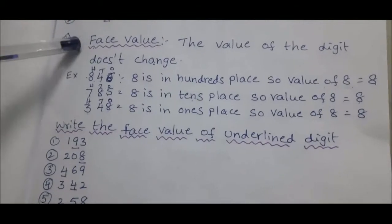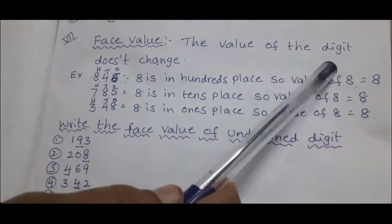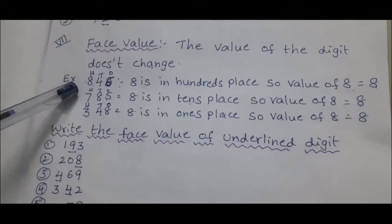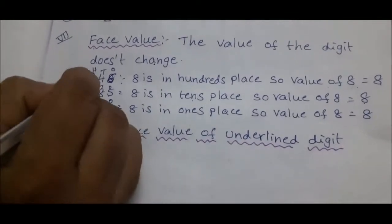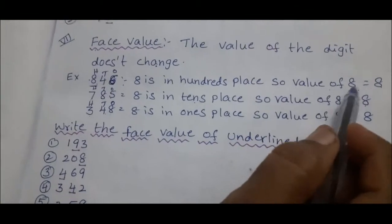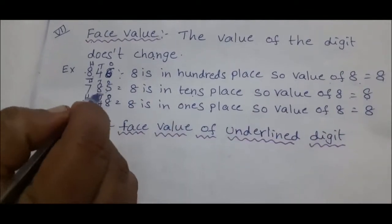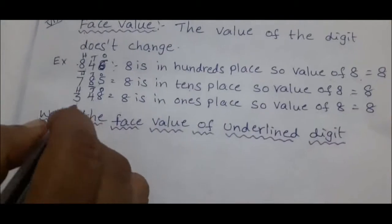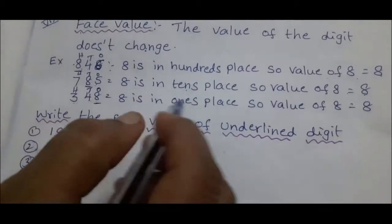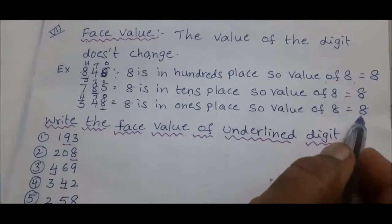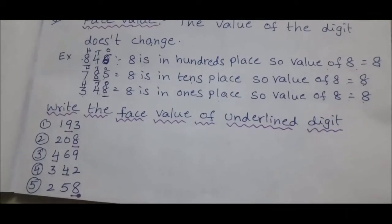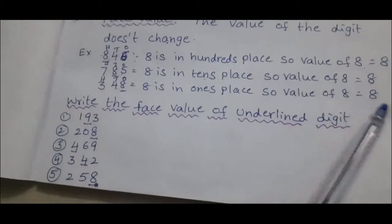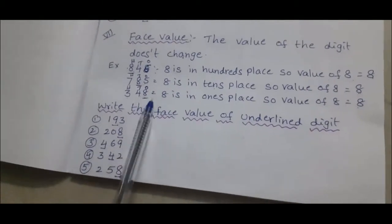Next topic: face value. The face value of a digit doesn't change. Example: in 846, 8 is in hundreds place, but face value of 8 equals 8. In 785, 8 is in tens place, face value of 8 equals 8. In 348, 8 is in ones place, face value of 8 equals 8. You observe that 8 is in different places but the face value of 8 doesn't change. Write the face value of the underlined digits.